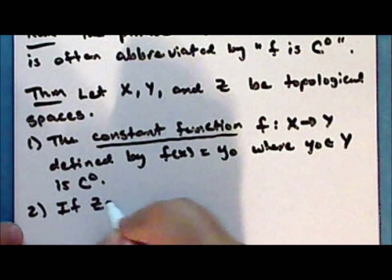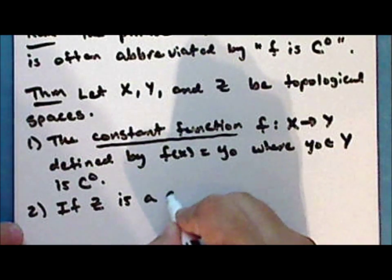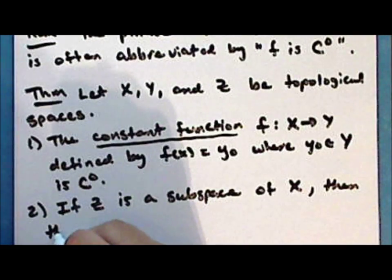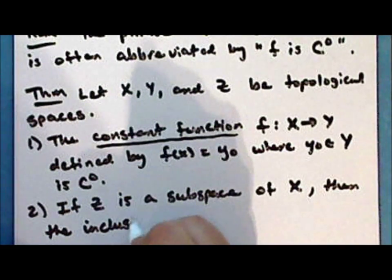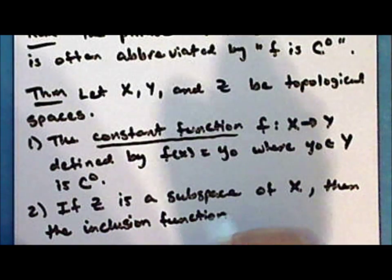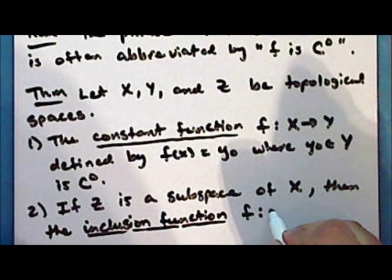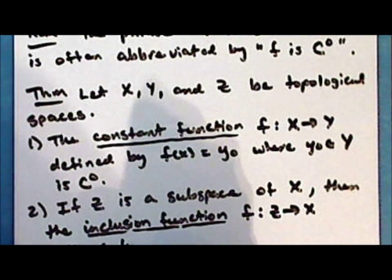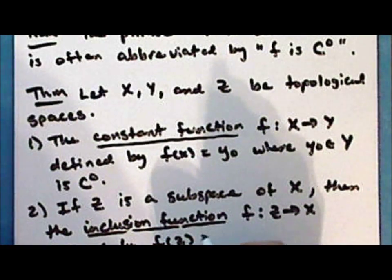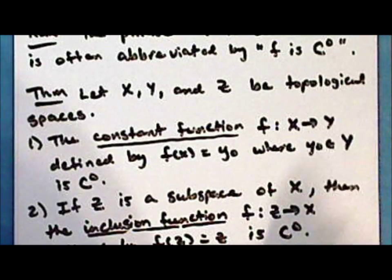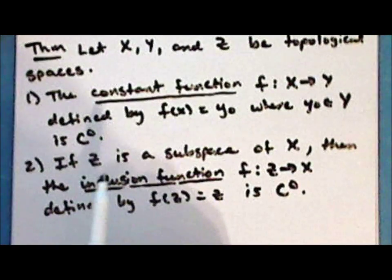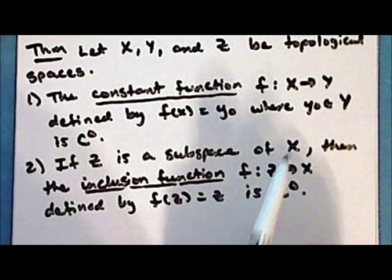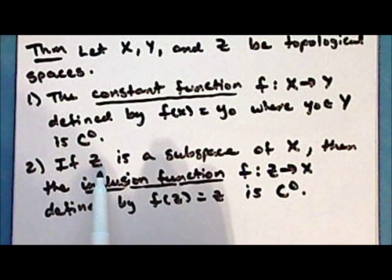And if Z is a subspace of the space X, then the inclusion function F mapping Z into X, defined by F(z) equals z, is continuous. Recall that in lecture 16, we proved as a lemma that in the absence of an a priori topology, where Z is a subset of the space X, the inclusion function induces the subspace topology on Z.